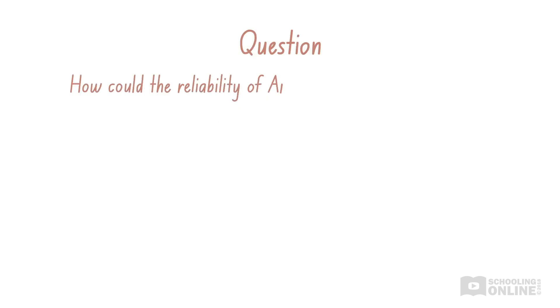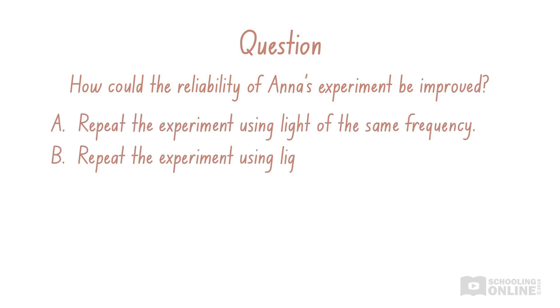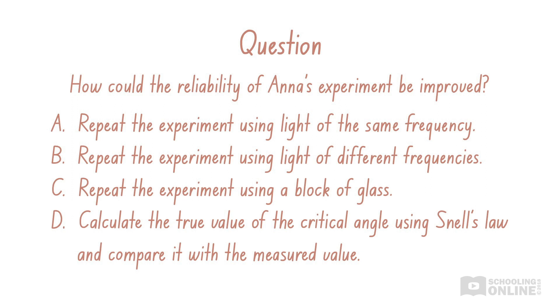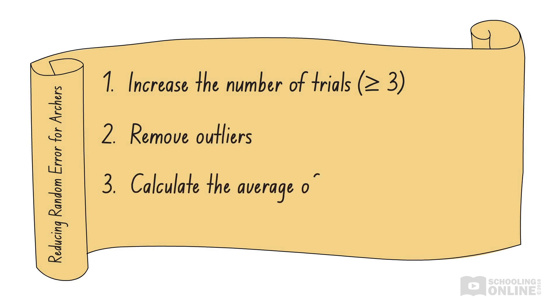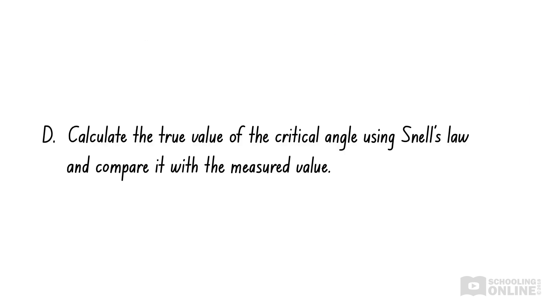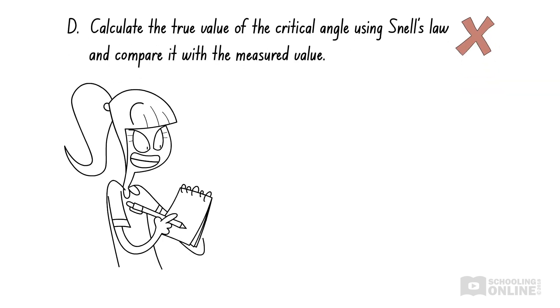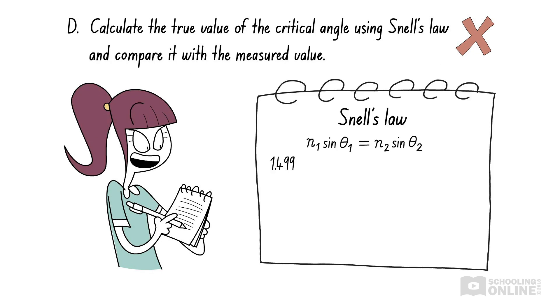How could the reliability of Anna's experiment be improved? Pause here to think about your answer. Remember, there are three main ways that we can improve reliability: by repeating experiments, removing outliers, and calculating the average of repeated measurements. Anna has only taken one measurement, so she cannot calculate an average or spot outliers. That means she'll need to repeat the experiment and collect more data. Option D does not mention repeating the experiment, so this is obviously incorrect.